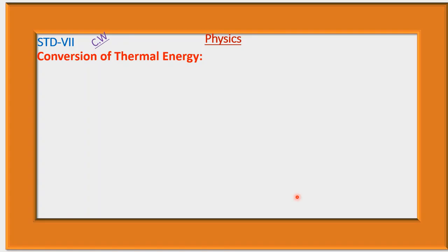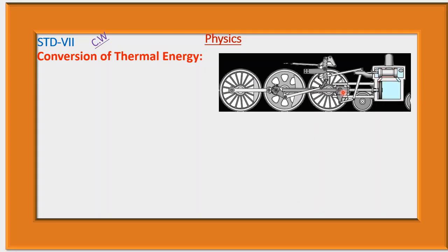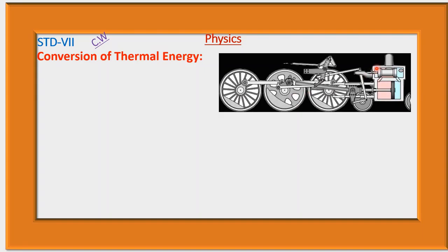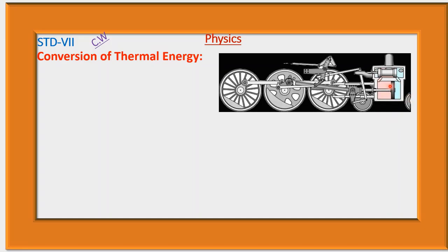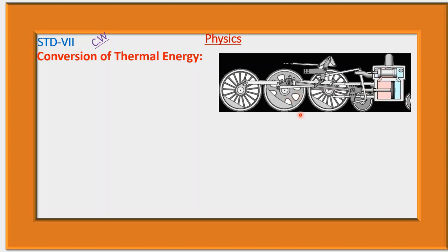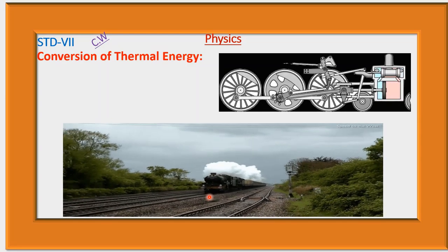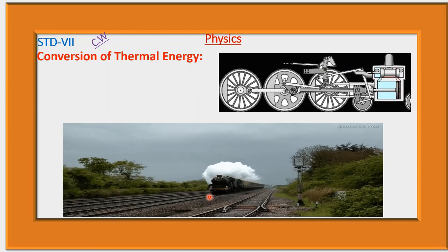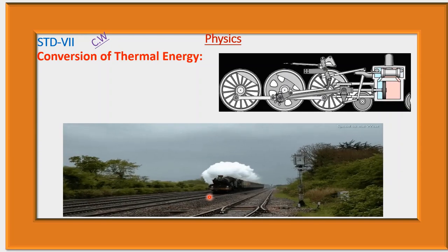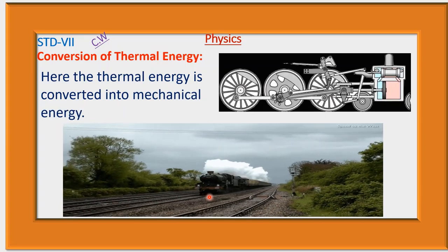Now, conversion of thermal energy. This steam engine is run by steam, and the steam is produced using heat energy. Using this steam, the steam engine is operated and the train moves. Here the thermal energy is converted into mechanical energy.